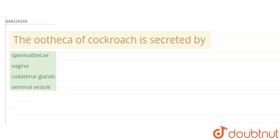The question says that the ootheca of cockroach is secreted by - the options are spermathecae, vagina, collateral glands, and seminal vesicles. So first of all, if we see here, we know that the gland actually opens into the vestibulum.